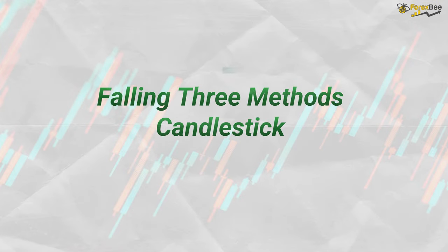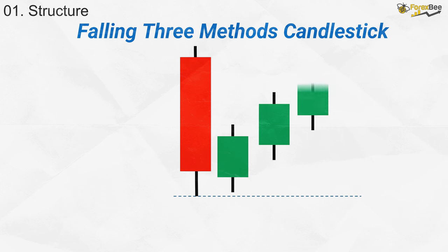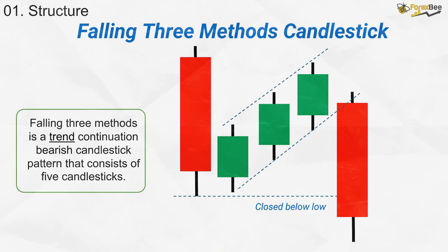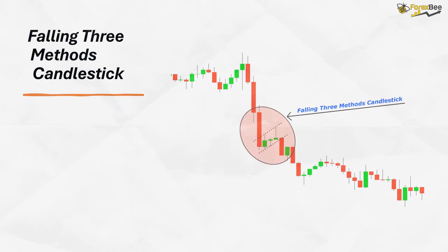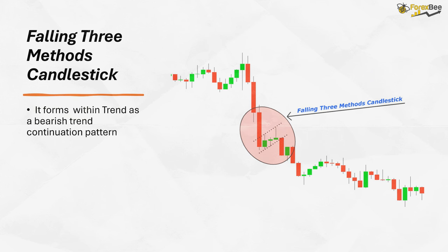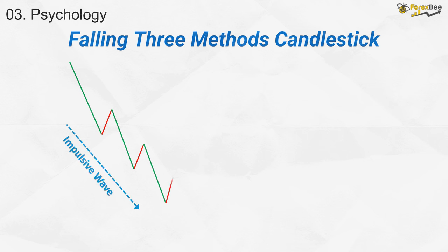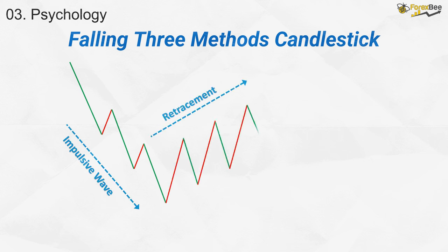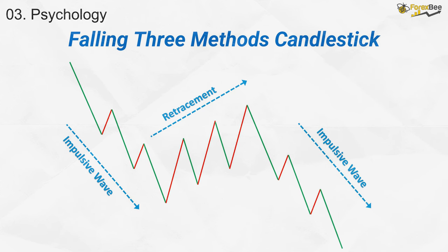Let's discuss the Falling Three Methods candlestick pattern. This pattern consists of five candles and signals a bearish trend continuation. The first is a large bearish candle, followed by three smaller candles that make higher highs and higher lows, representing a brief pullback. These smaller candles stay within the first candle's range, indicating weak buying pressure. The fifth candle is another large bearish candle that breaks below the low of the first, confirming the continuation of the downtrend. Psychologically, this pattern reflects a brief retracement after a strong downward move, and when the final bearish candle breaks below the first candle's low, it confirms that sellers are still in control.